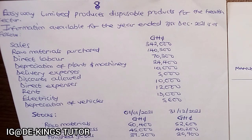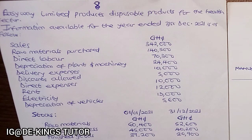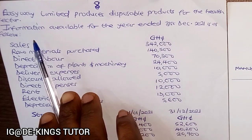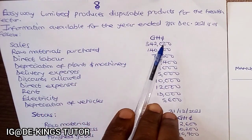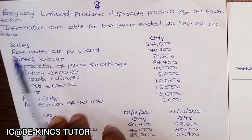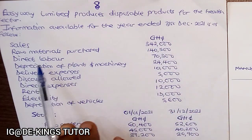We want to see the number eight question of the WAYEK 2023. We are doing a series — we've seen number nine, now let's see number eight of the WAYEK account in 2023. The question says: Easy Way Limited produces disposable products for the health sector.